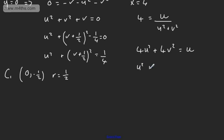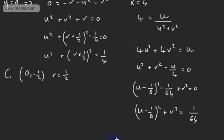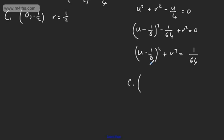Dividing through by 4 and bringing U to the left-hand side: U squared plus V squared minus U over 4 equals 0. Completing the square: (U minus 1 over 8) squared minus 1 over 64 plus V squared equals 0, so (U minus 1 over 8) squared plus V squared equals 1 over 64. This gives circle C2 with centre at (1 over 8, 0) and radius equal to the square root of 1 over 64, which is 1 over 8.